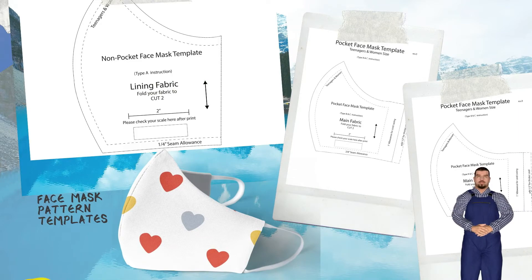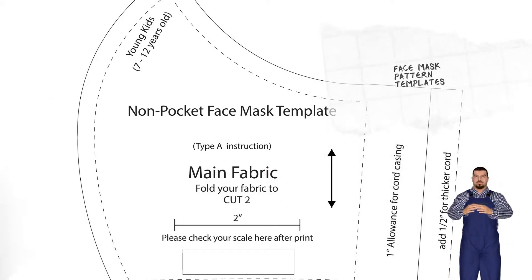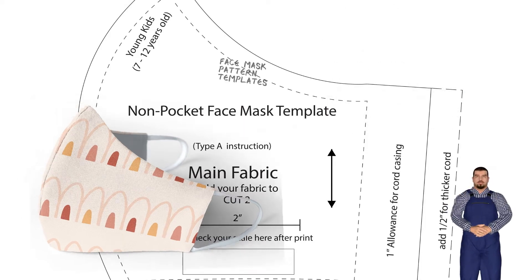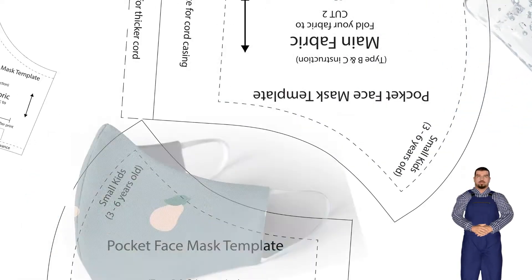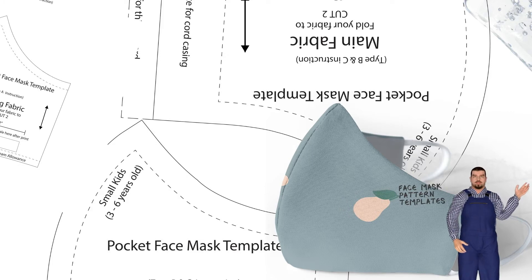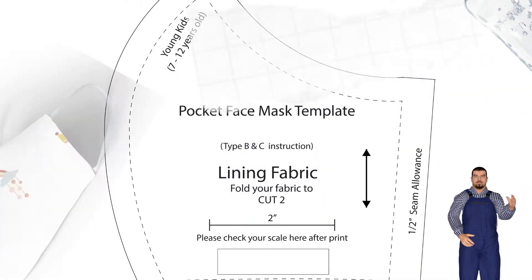1. Face Mask Sewing Pattern, without seam allowance included. Use on Type A, B, and C, all four sizes: men, women/teenagers, kids 7 to 12, kids 3 to 6.